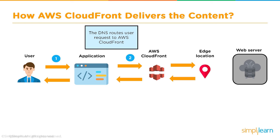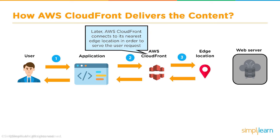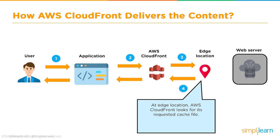AWS CloudFront connects to the nearest edge location. Edge locations are servers where it caches files, documents, and web code. CloudFront connects to its nearest edge location to serve the user's request. At the edge location, AWS CloudFront looks for the requested cached file. If the file is found — if it's available in the cache of the edge location — AWS CloudFront sends the file to the user.